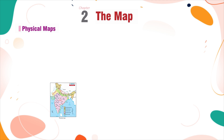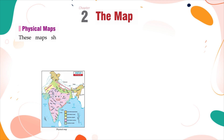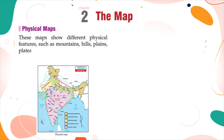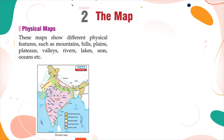Physical Maps — these maps show different physical features such as mountains, hills, plains, plateaus, valleys, rivers, lakes, seas, oceans, etc.